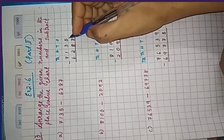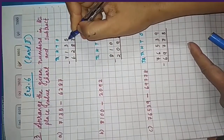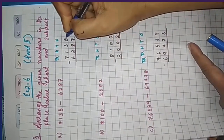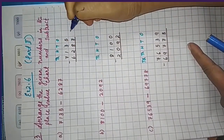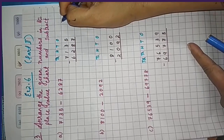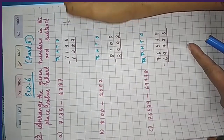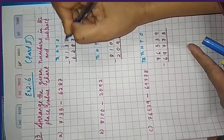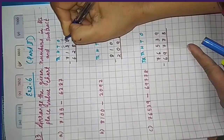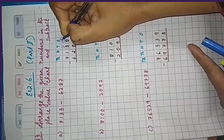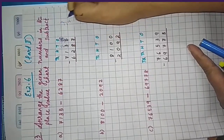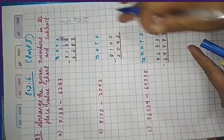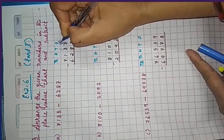Now, 5 ones minus 7 ones is not possible because 5 is smaller than 7. So 5 has to borrow from the 3 tens. 3 tens minus 1 leaves 2 tens here. The borrowed 1 ten equals 10 ones, so 10 ones plus 5 ones gives us 15 ones total.